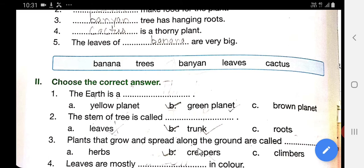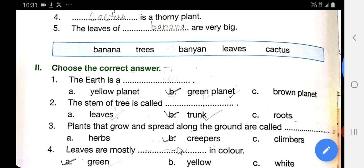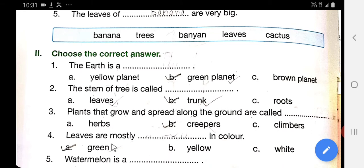Plants that grow and spread along the ground are called creepers. Aise plants jo puri tarah se zameen pe fail jate hai aur aise bhagte hain, unko kya bulte hai? Creeper bulte hai. Leaves are mostly green in color. Jo leaves hoti hai wo jyada tar green color ki.